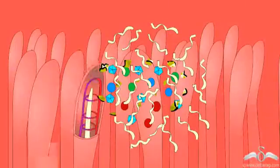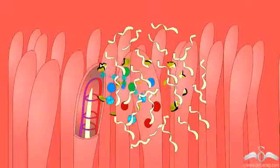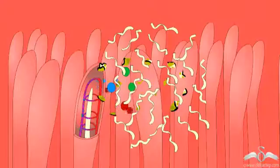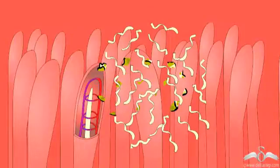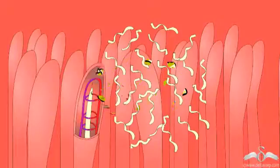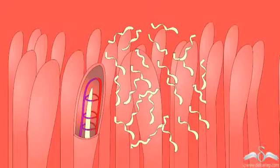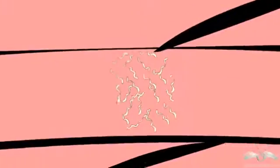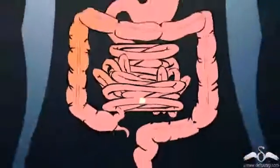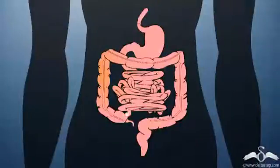The nutrients in the food get absorbed into the blood vessels present in the villi of the small intestine. The undigested, unabsorbed food gets transported from the small intestine to the large intestine and is finally eliminated from the body.